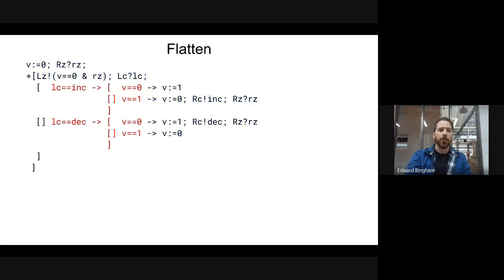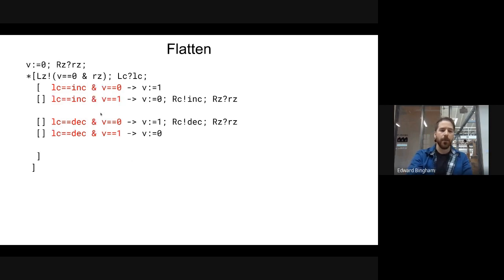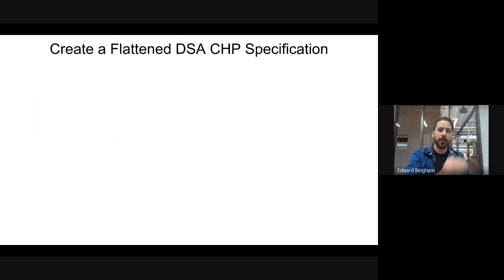We want to simplify this specification. Our first step is to take the conditional statements and flatten them — basically combine them together. Now we get: if it's an increment and V is zero, set V to one; if it's an increment and V is one, set V to zero and send out RC, wait for RZ; same thing for decrement. Our next step is to flatten this out into a dynamic single assignment CHP specification, optimize it pre-implementation — basically make all the design decisions we can before we create production rules.